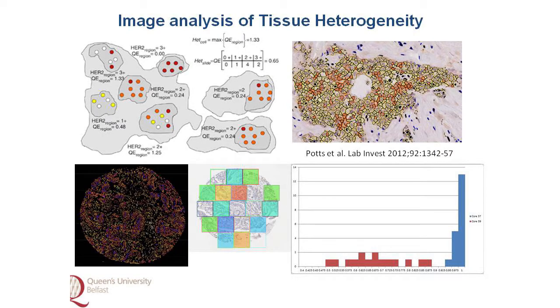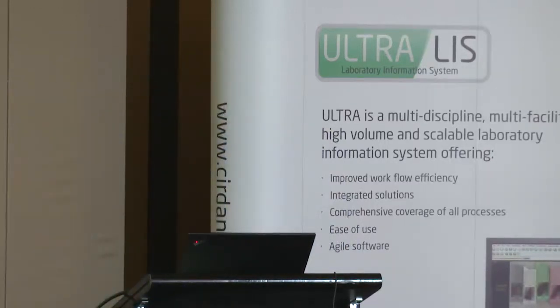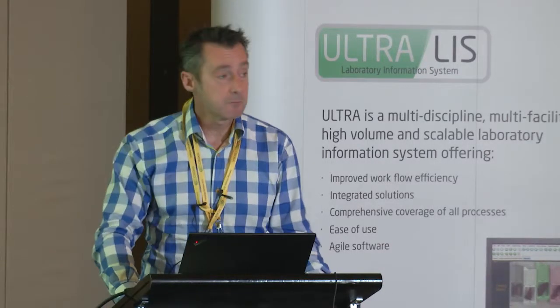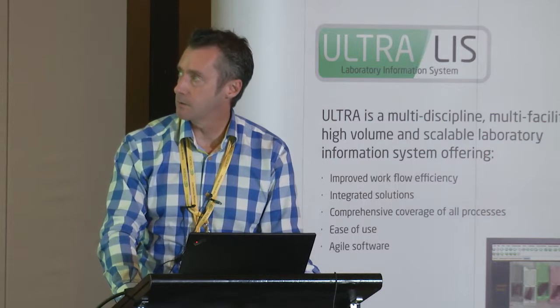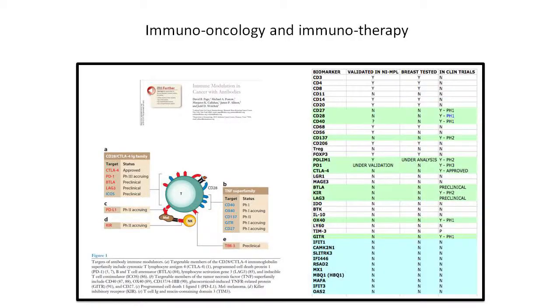Imaging also allows us to measure tissue heterogeneity — the variation of biomarker expression within tissue — which is very difficult to do visually. Because we have data in a digital format and can quantitatively evaluate it, we can identify cases with a very low level of variation against cases with a very broad spectrum of variation. In fact, it may well be the variation in biomarker expression that is of true value rather than the median of that marker.